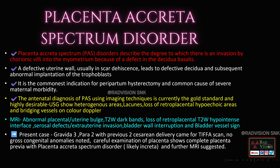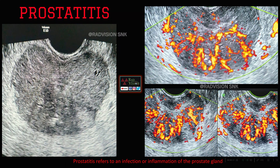Placenta accreta spectrum is commonly a defect in the uterine wall, commonly seen at the level of scar dehiscence, which leads to defective decidua and subsequent abnormal implantation of the trophoblast. It is a common indication for peripartum hysterectomy and is associated with severe maternal morbidity. On ultrasound: heterogeneous placenta, placental lacunae, loss of retroplacental hypoechoic area, and bridging vessels on color Doppler. On MRI, look for T2-weighted dark bands, loss of retroplacental T2 hypointense interface, serosal defects, extrauterine invasion, bladder wall interruption, and the bladder vessel sign. This case was a G3P2 with two previous cesarean sections, diagnosed as placenta accreta spectrum — likely placenta increta — and MRI was suggested.